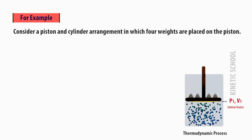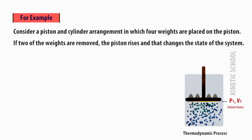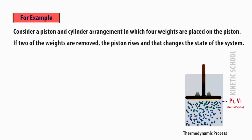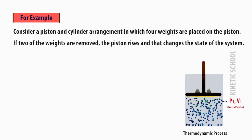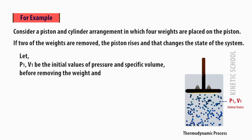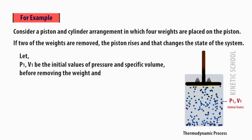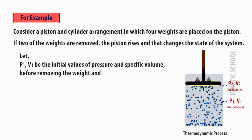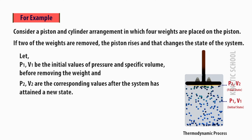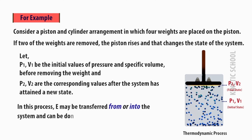For example, consider a piston and cylinder arrangement in which four weights are placed on the piston. If two of the weights are removed, the piston rises and that changes the state of the system. Let p1 and v1 be the initial values of pressure and specific volume before removing the weight, and p2, v2 are the corresponding values after the system has attained a new state. In this process, energy may be transferred from or into the system, and can be done by or on the system.